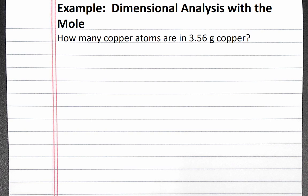In this example problem, we'll use dimensional analysis with an element's molar mass and Avogadro's number. Our problem reads, how many copper atoms are in 3.56 grams of copper?